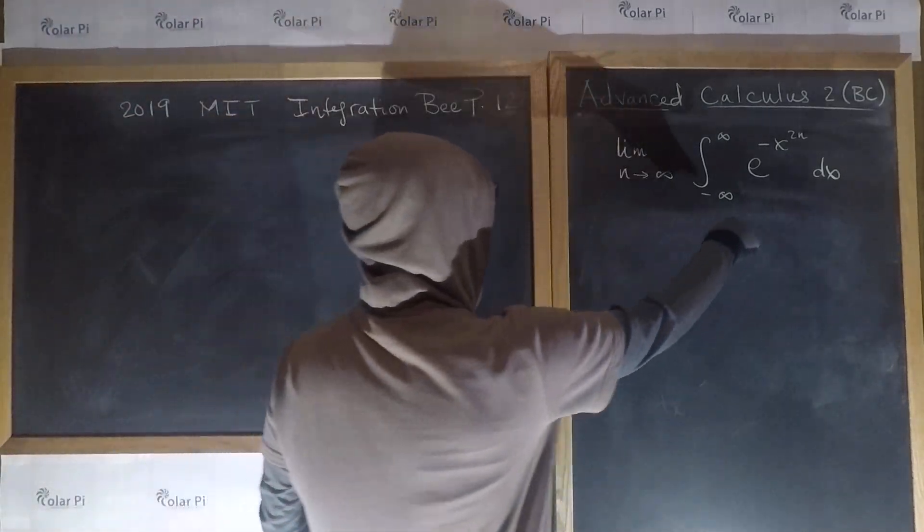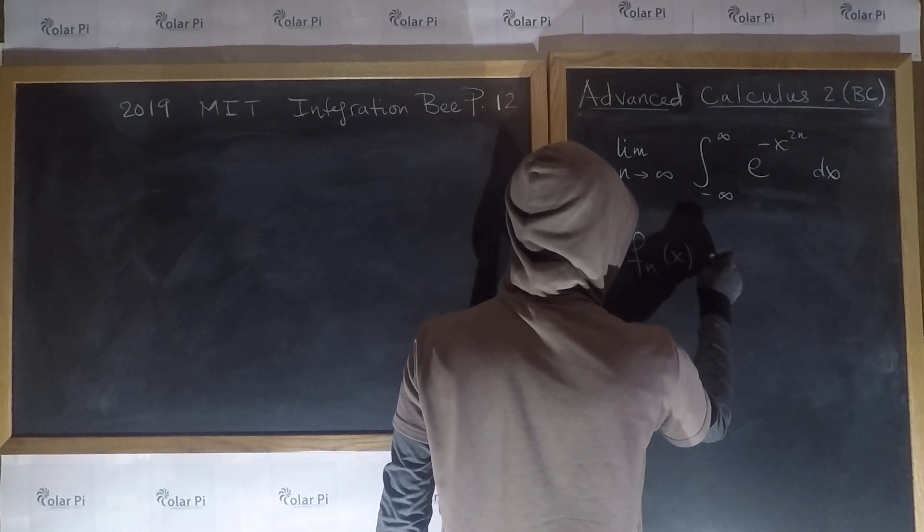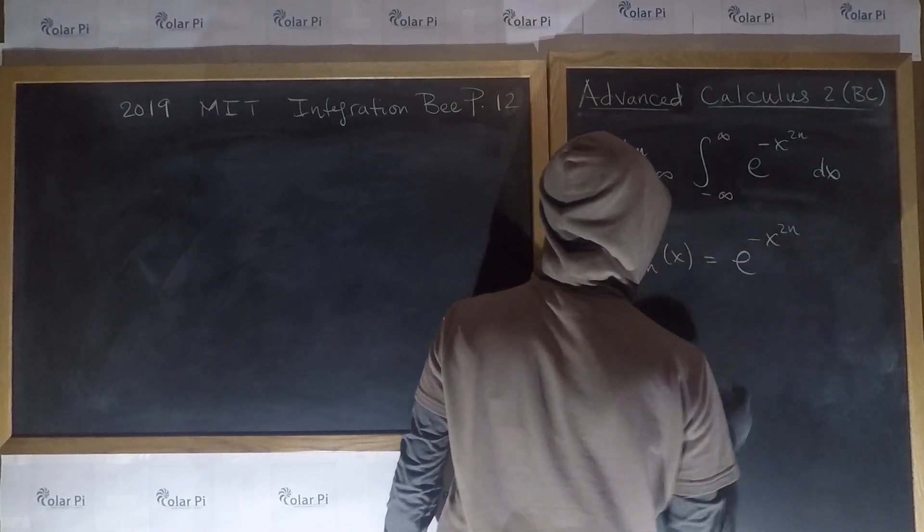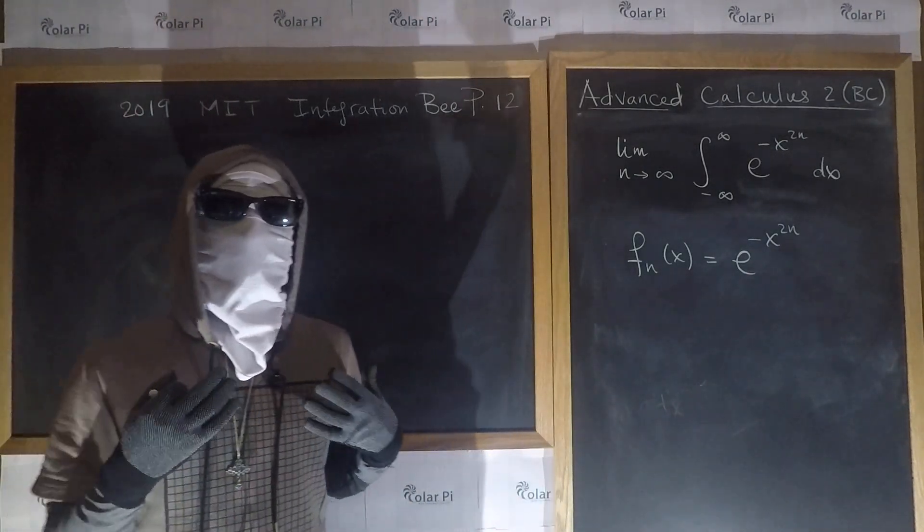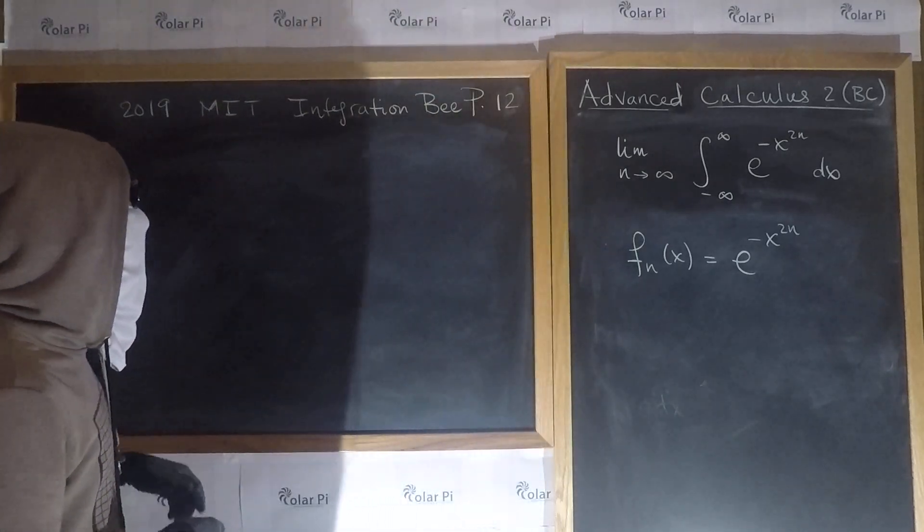To start, notice that the integrand here is an even function. That is, this here is even, regardless of what n is, meaning that we have symmetry about the y-axis, because even functions have symmetry about the y-axis. Therefore,